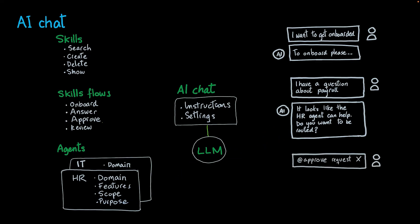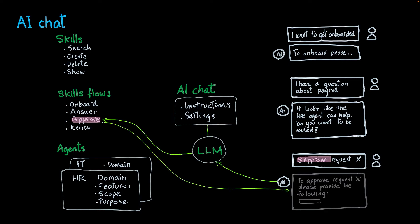There is also a third way of identifying functionality within the AI chat: an explicit naming convention. If you know the name of the skill, agent, or skill flow you want to use, you add the @ symbol and then mention the name of that function. For example, a user says "@add approved request X." The AI invokes the LLM, identifies the explicit name used in the request, finds the appropriate skill flow, and comes back with the appropriate answer.